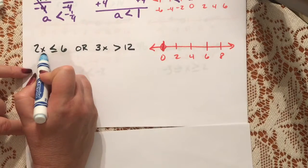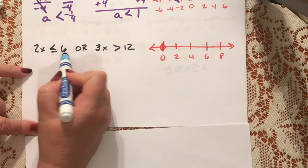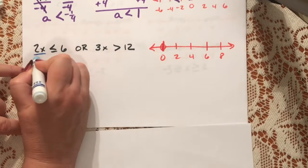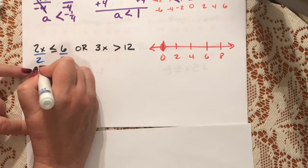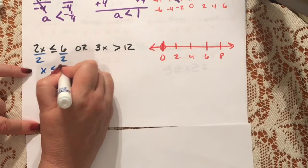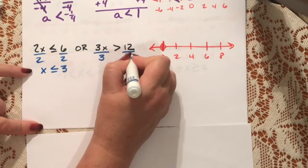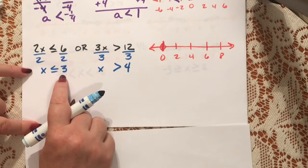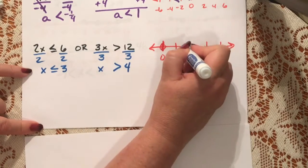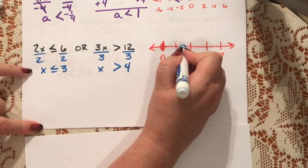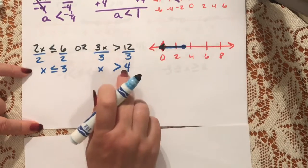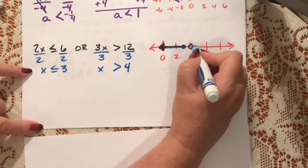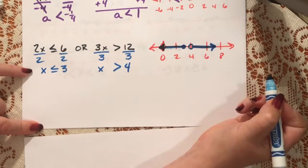Our next problem: 2x is smaller than or equal to 6, or 3x is larger than 12. Divide both sides by 2: x is smaller than or equal to 3. Divide both sides by 3: x is larger than 4. So here we have a closed circle on 3 and x is smaller than it, and an open circle on 4 and x is larger than it.